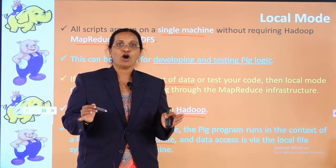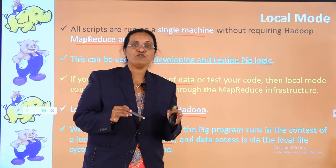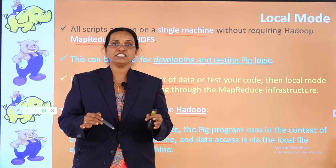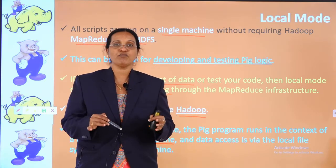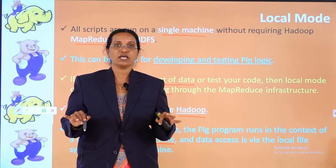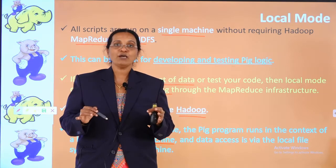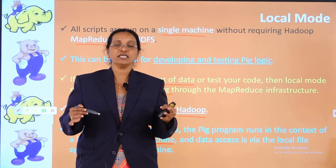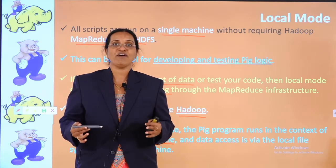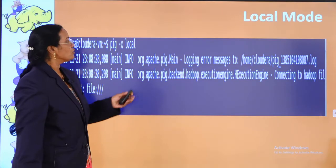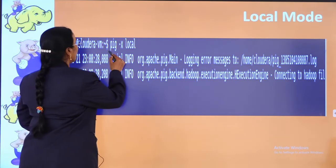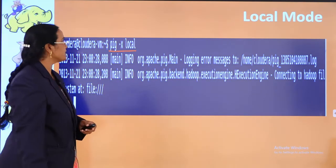In summary, local mode has no HDFS, no MapReduce implementation, and no job tracker or task tracker. When you have a small amount of data, rather than using the MapReduce infrastructure you can use local mode, as it gives results in a quicker and faster manner. To enter local mode, the command is: pig -x local.